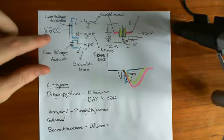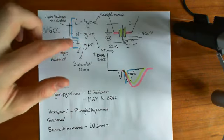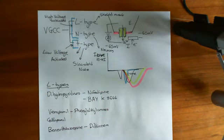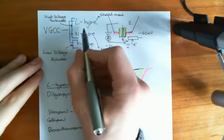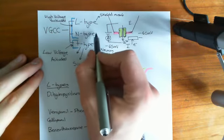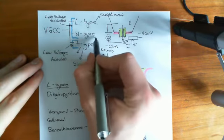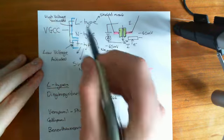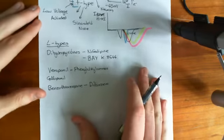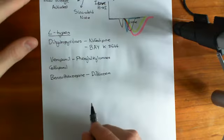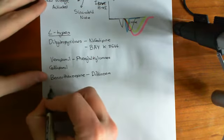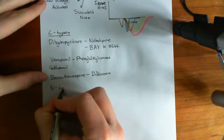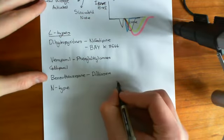We started off by exploring the initial classification of voltage-gated calcium channels into L-type, N-type, and T-type. However, it gets more complicated because pharmacological agents allow us to distinguish between two types of voltage-gated calcium channels in neurons. What was found is that there were two types of calcium channels in neurons: N-type, and a new type called P-type.